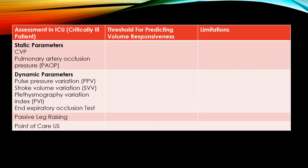Next is assessment of fluid responsiveness in ICU or critically ill patients. There are static parameters and dynamic parameters. Static parameters include central venous pressure and pulmonary artery occlusion pressure. However, routine use of CVP, pulmonary artery occlusion pressure, or estimated end-diastolic volume is not recommended these days because they do not accurately reflect volume responsiveness or intravascular volume status, even when used in combination — based on randomized trials and systematic reviews.